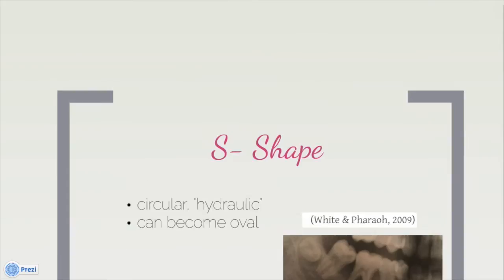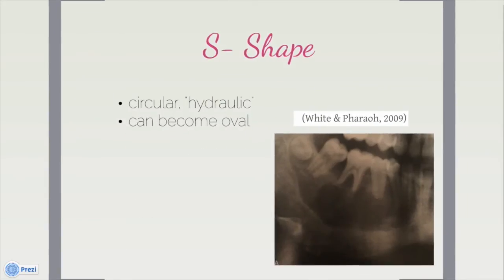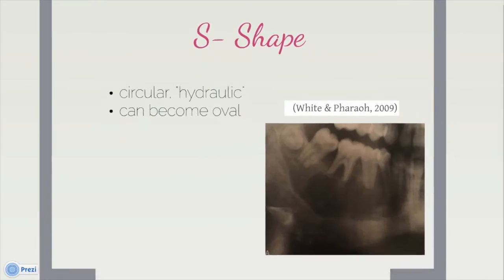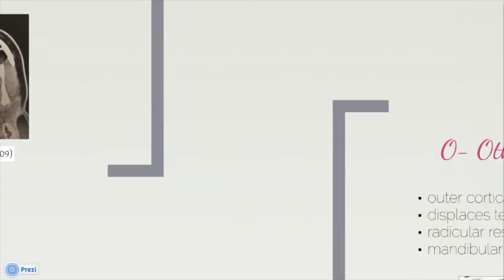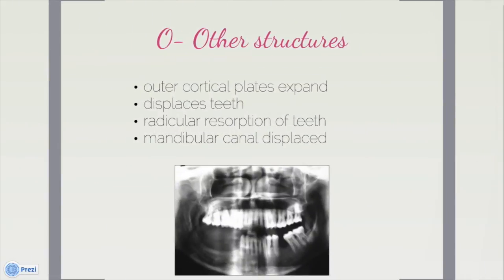The shape of the lesion is best described as circular or hydraulic, and depending on size, it can become more of an oval shape. Aneurysmal bone cysts can appear as multilocular or unilocular radiolucent lesions, although a multilocular appearance is more common. In CT soft tissue algorithm images, large vascular spaces may appear as radiolucent circles. The outer cortical plates can be expanded if the bone cyst becomes large, which is more pronounced than in other lesions. Aneurysmal bone cysts can also displace teeth and cause radicular resorption. In more extreme circumstances, the mandibular canal can become displaced to the lower border of the mandible.